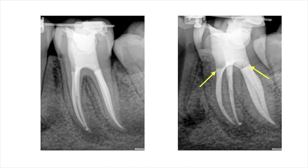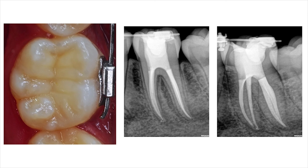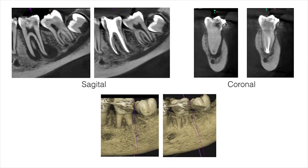Periapical radiographs at 3 months — both parallel and 30 degrees distal angulation — show excellent adaptation of the SDR material to the pulp floor and the walls, providing good coronal seal. At 6 months, the restoration appeared to be functional and retained its polished surface, and periapical radiographs also demonstrated good periapical healing. A follow-up CBCT scan revealed good healing of the periapical pathology, with sagittal slices, coronal slices, and a 3D reconstructed view all clearly demonstrating good healing.